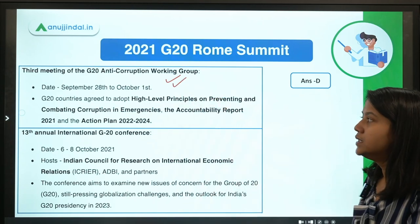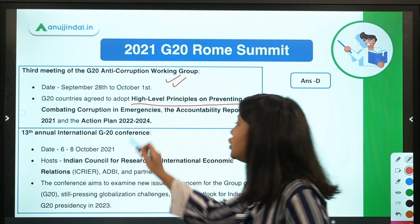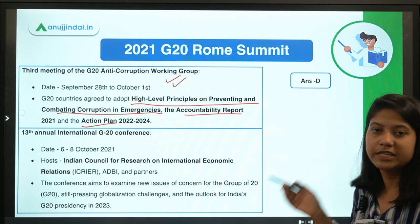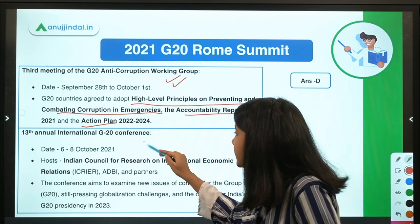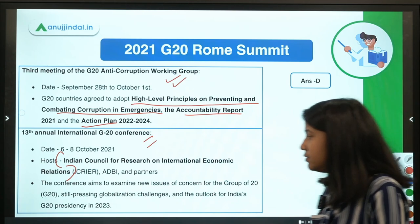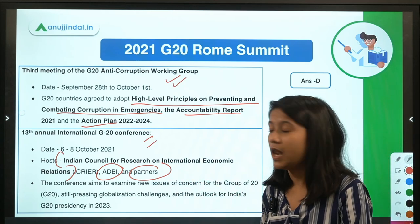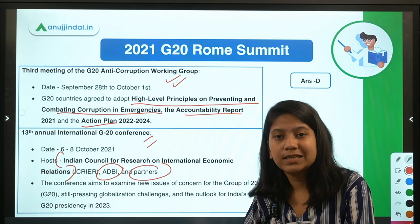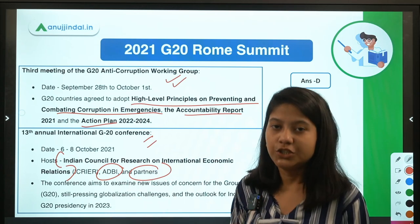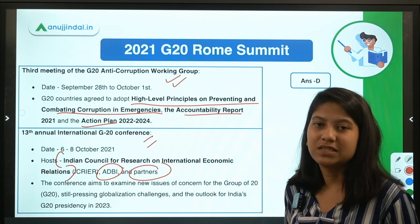The first meeting was the third meeting of the G20 Anti-Corruption Working Group, where three documents were adopted: the High-Level Principles on Preventing and Combating Corruption in Emergencies, an Accountability Report, and an Action Plan. The 13th Annual International G20 Conference was hosted by the Indian Council for Research on International Economic Relations, the Asian Development Bank Institute, and partner organizations. Its major focus was to discuss the challenges India may face when it hosts the G20 presidency.